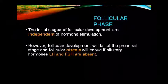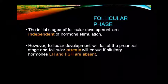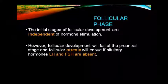Now we will learn about the follicular phase. The follicular phase is the first and initial stage of the menstrual cycle. Follicular development in this stage is independent of hormone stimulation initially. Here, follicles develop but their development fails at the pre-antral stage and follicular atresia will occur if pituitary hormones LH and FSH are absent. If LH and FSH are absent from the pituitary, follicular atresia occurs and follicles are lost.